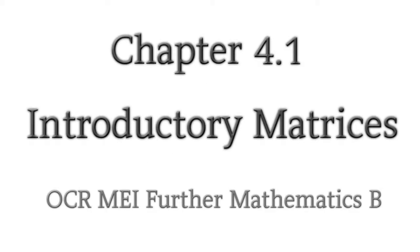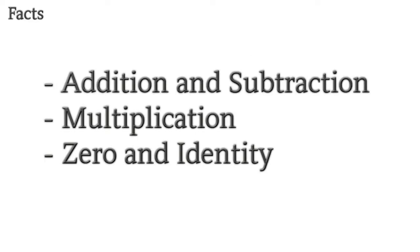Welcome back to OCR MEI for the Mathematics B. Today we're doing chapter 4.1, Introductory Matrices. You might have dealt with matrices during GCSE years. I'm going to teach you from the basics, starting from addition and subtraction, followed by how to multiply two matrices. Then I'm going to talk about two special matrices called the zero matrix and the identity.